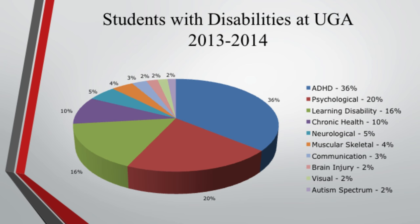Now, this is just the students who are registered with our office. By no means are all students who have disabilities at UGA registered with us. If a student comes to you and wants accommodations but isn't registered with us, please direct them to our office so they can go through the proper channels to receive accommodations.